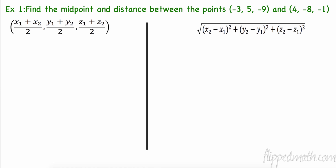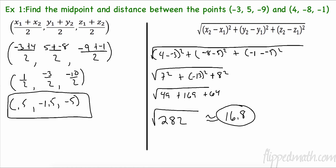Pause the video and find the midpoint between these two points. The midpoint is: (-3 + 4)/2 = 0.5, (5 + (-8))/2 = -1.5, and (-9 + (-1))/2 = -5. For the distance, we get √[7² + (-13)² + 8²] = √282.